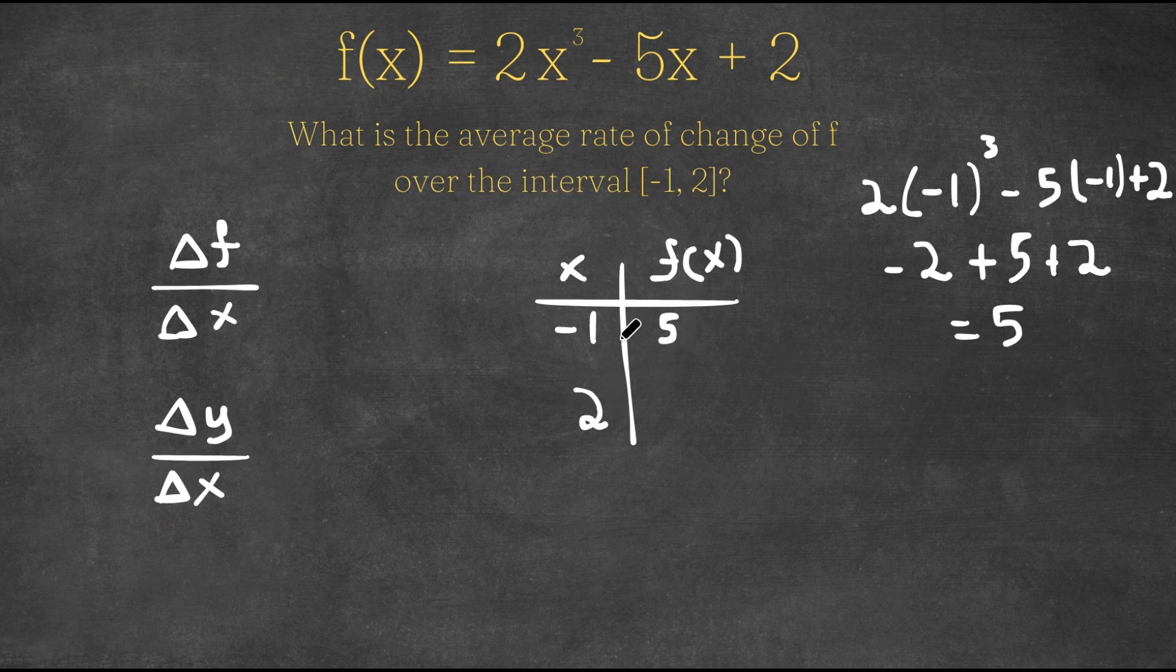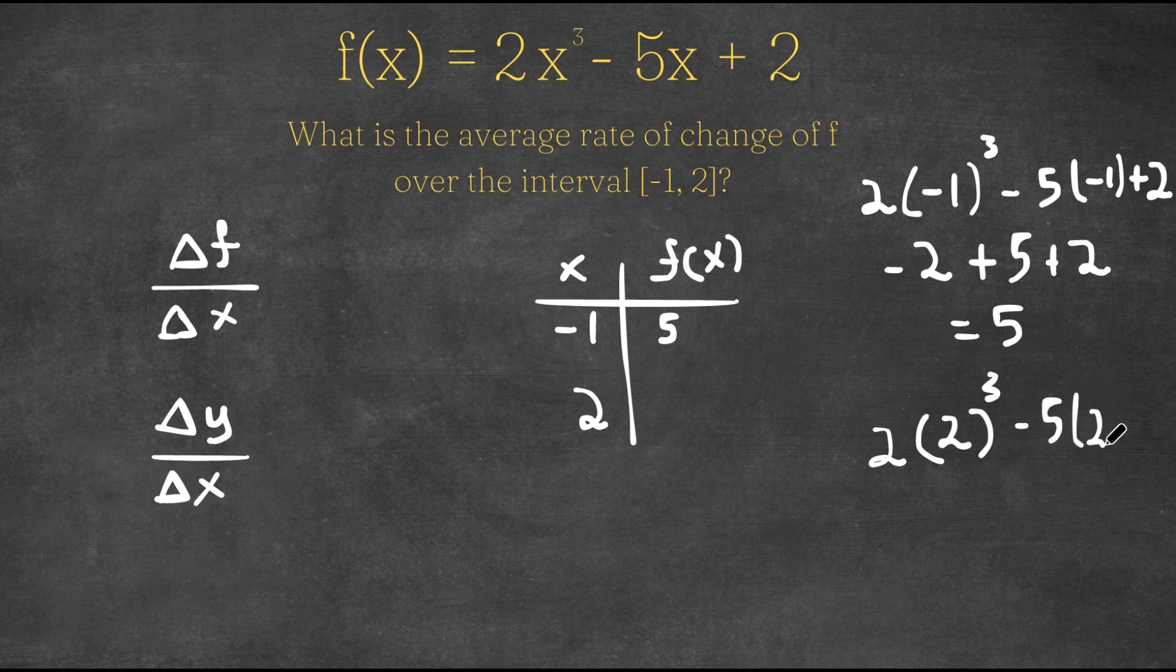Now, we're going to do the same thing with 2. So we have 2 times 2 to the power of 3 minus 5 times 2 plus 2. 2 to the power of 3 is 8 and 8 times 2 is 16. Negative 5 times 2 is negative 10. And we have our plus 2.